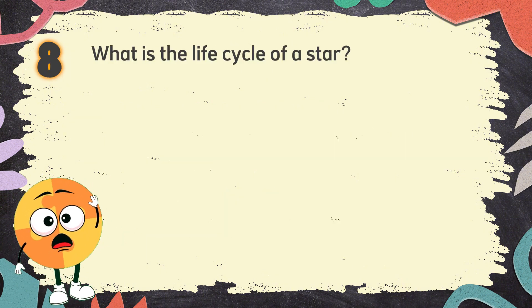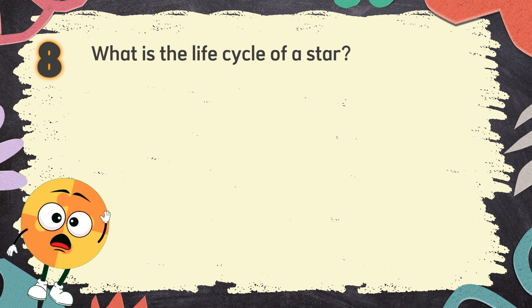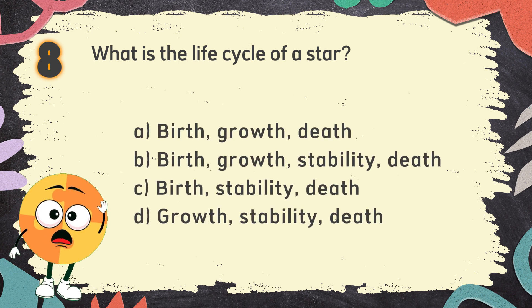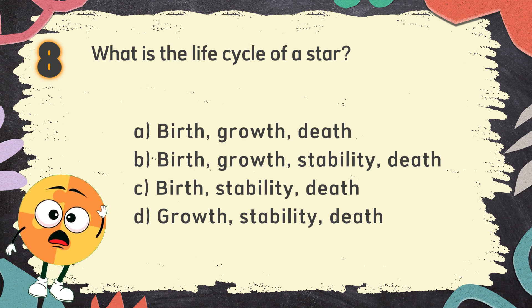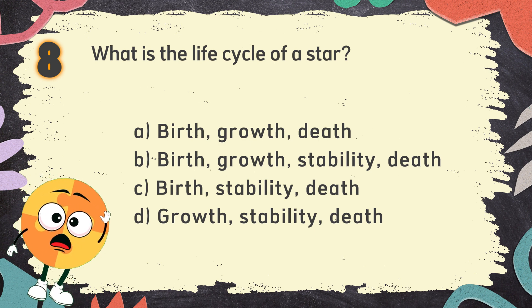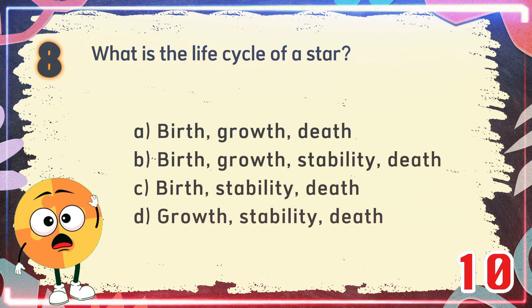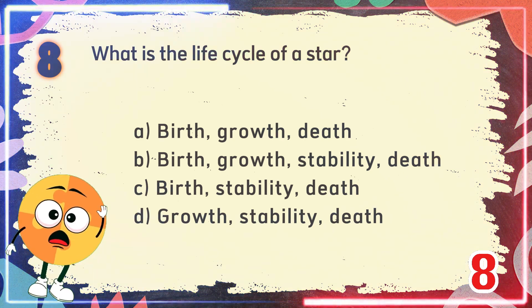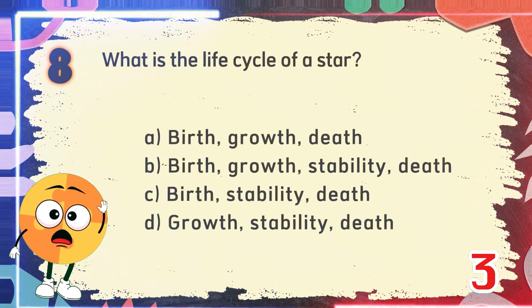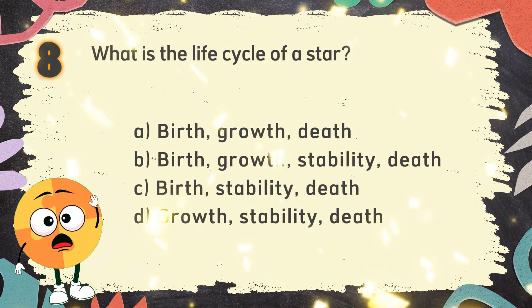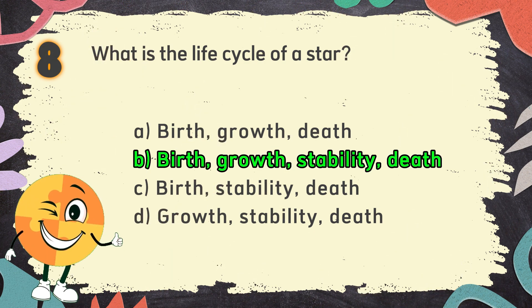Number 8. What is the life cycle of a star? The choices are: A. Birth, Growth, Death. B. Birth, Growth, Stability, Death. C. Birth, Stability, Death. The correct answer is B: Birth, Growth, Stability, Death.